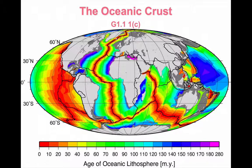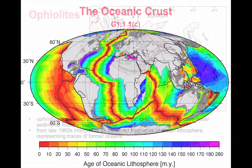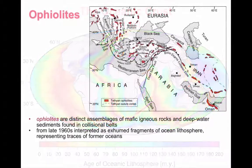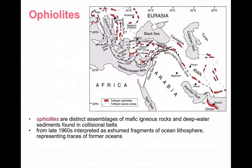We can see from this map that there's a pattern, a uniformity to the oceanic crust. We need to ask ourselves as geologists: does that extend beneath the surface? We get our evidence for the composition and structure of the crust from two sources.